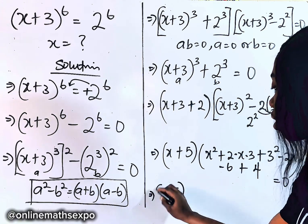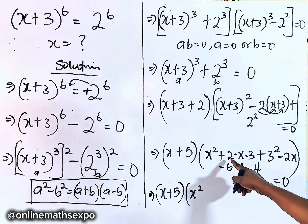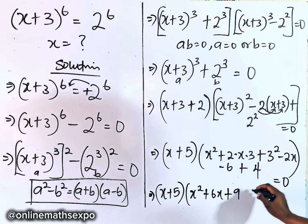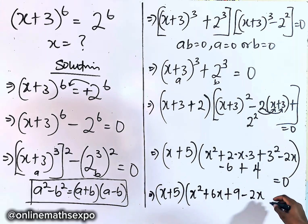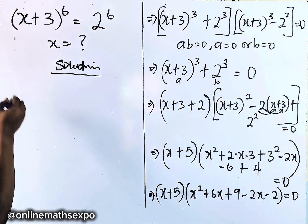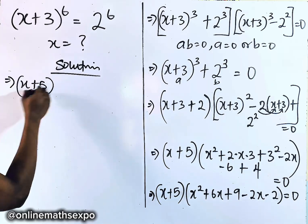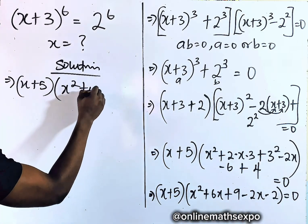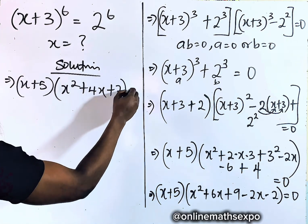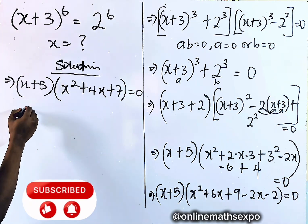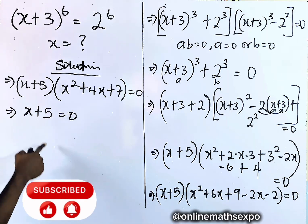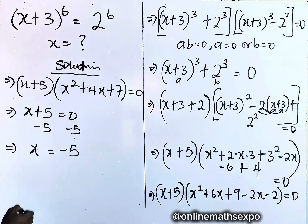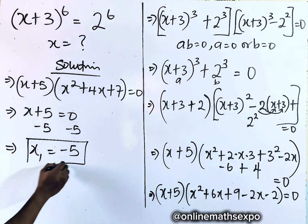So we have (x + 5) times (x² + 6x − 2x + 9 − 6 + 4) equal to 0. Combining like terms: 6x − 2x = 4x, and 9 − 6 + 4 − wait, −6 + 4 = −2, so 9 − 2 = 7. We get (x + 5)(x² + 4x + 7) = 0. Taking the first factor: x + 5 = 0 gives x = −5. This is the first value of x.